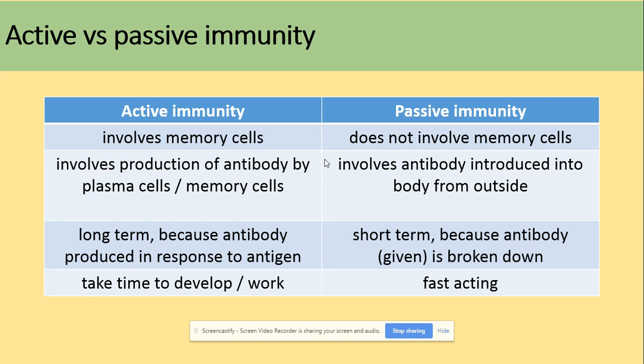First, we will look at the differences between active and passive immunity. Active immunity involves memory cells; passive does not. Active immunity involves the production of antibodies by plasma cells or memory cells, while passive involves antibodies introduced into the body from outside. Active is long term because it produces its own antibodies. Passive is short term because antibodies are broken down. Active takes time, whereas passive is fast acting because antibodies are already introduced.